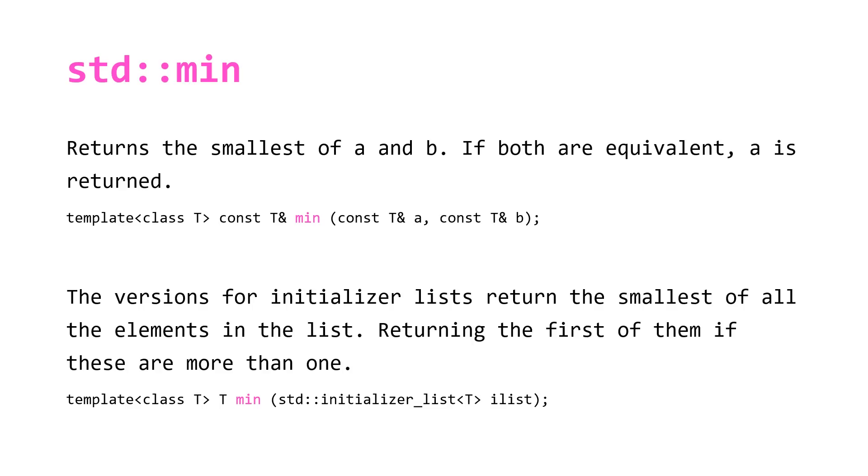For std::min we have an algorithm that returns the smallest of a and b. If both are equivalent, a is returned. You can see here that our function min takes two const references to a and b and returns a const reference to the result.